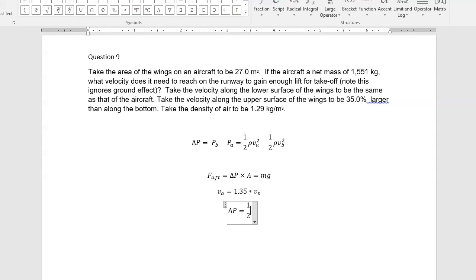Delta P is one-half rho... I'm going to use some big brackets here. So here, this is 1.35 VB squared minus VB squared.